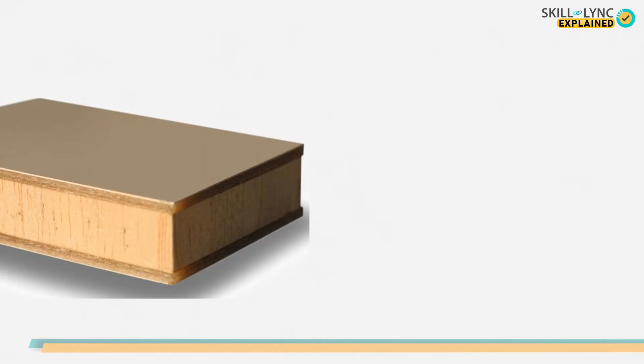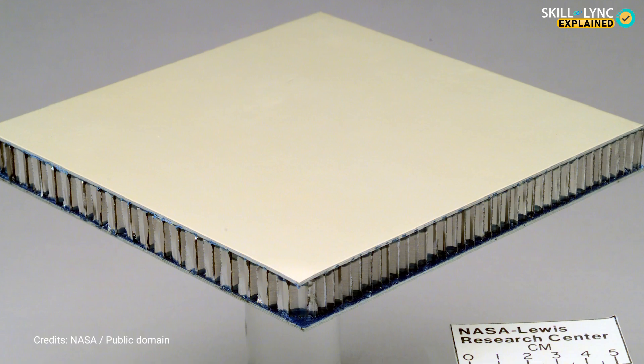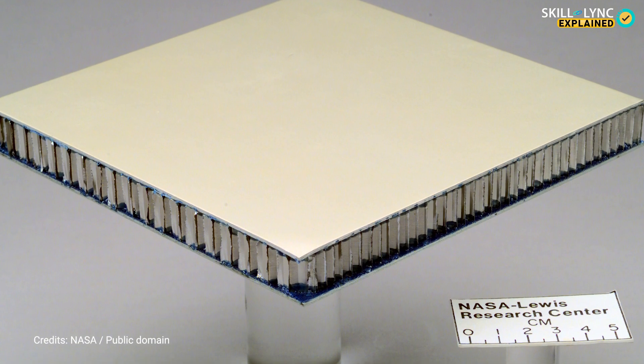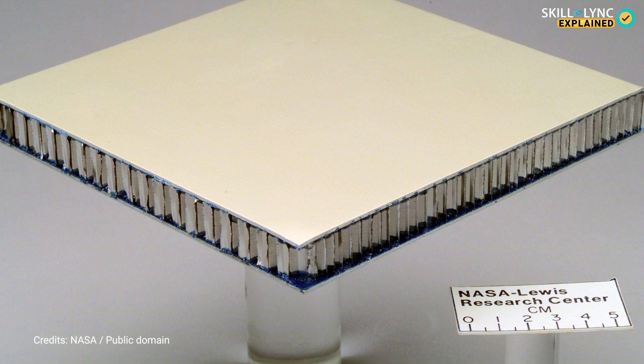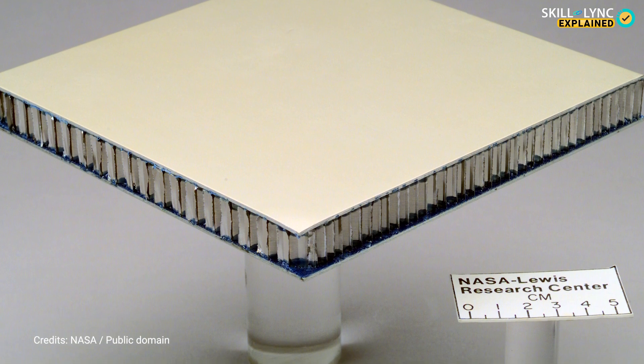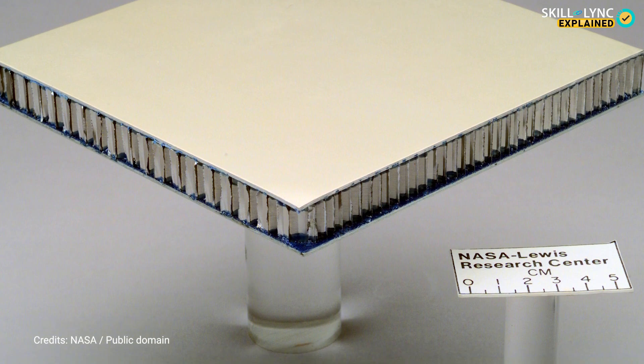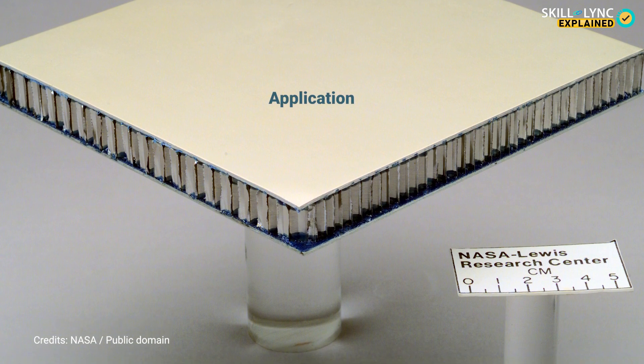Now the last classification we have is the sandwich composite. In this type, a lightweight core material is placed in between two thicker sandwich panels. The panels on either side will be strong enough to withstand the applied loads. This type of composites are used in applications like roofs, walls, and floors of buildings.